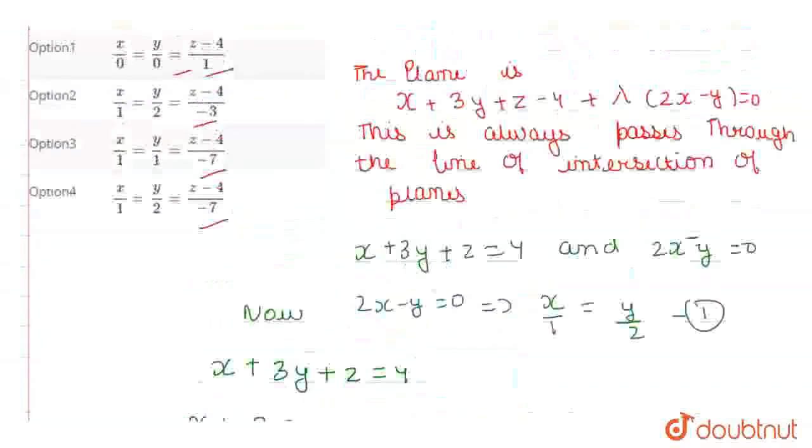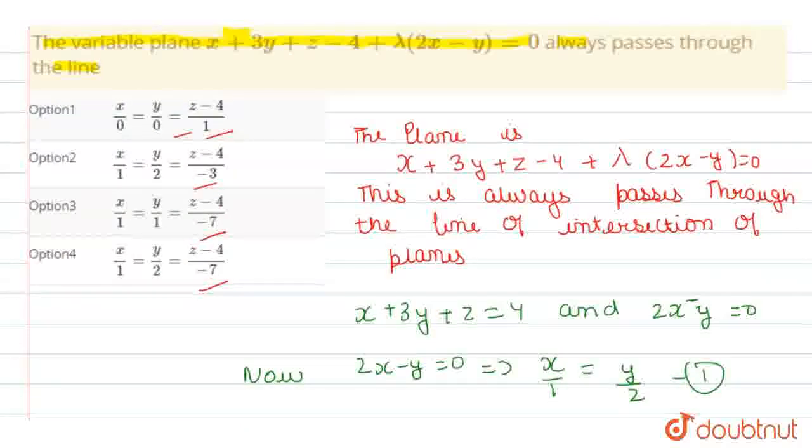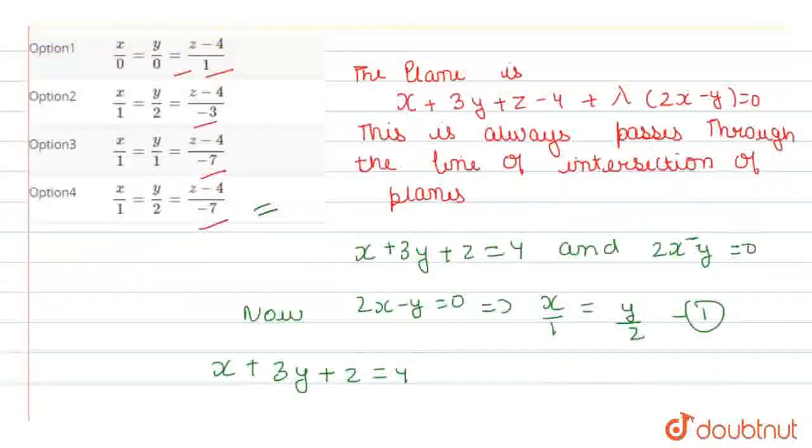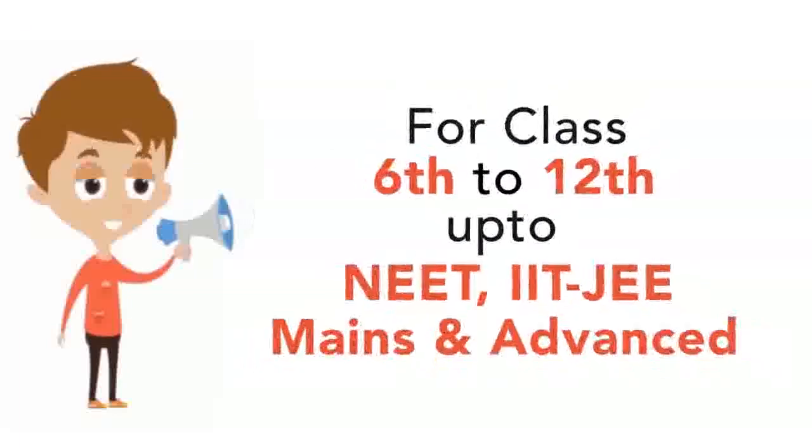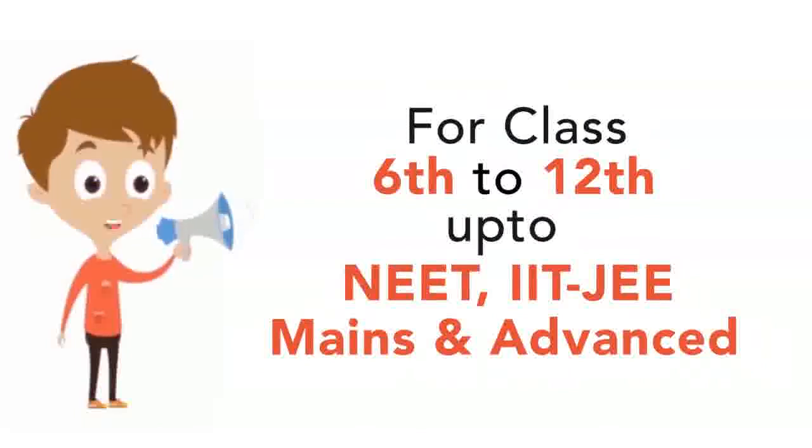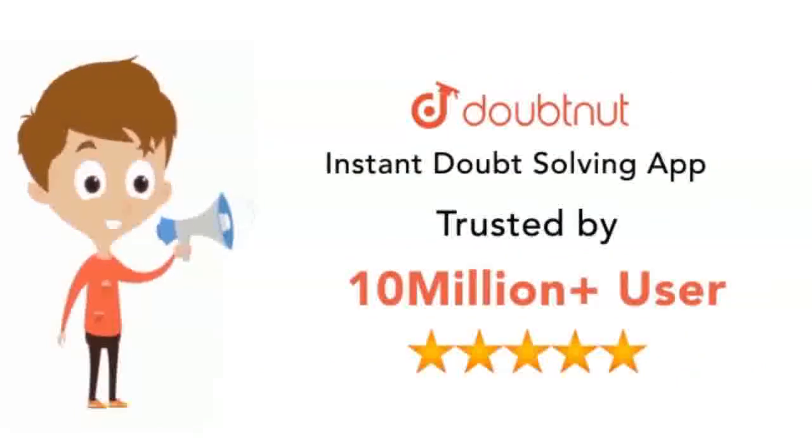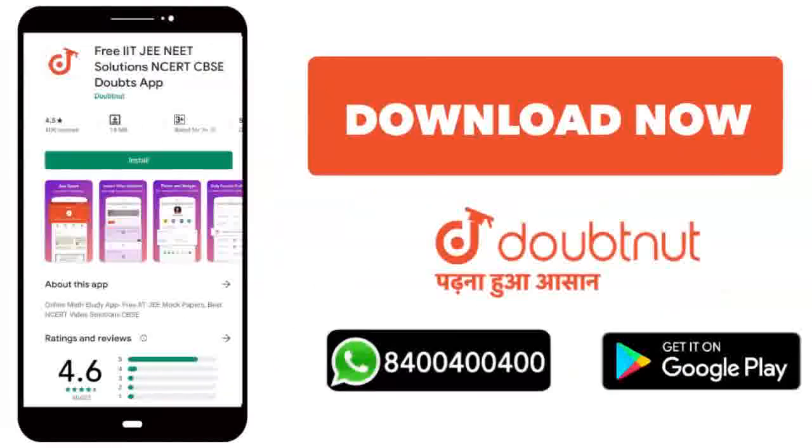Our line is x over 1 equal to y by 2 equal to z minus 4 upon minus 7. Now we check which option contains the right value. We can see that option 4 contains the right value, so option 4 is correct. Thank you guys, I hope you liked my video. Thank you.